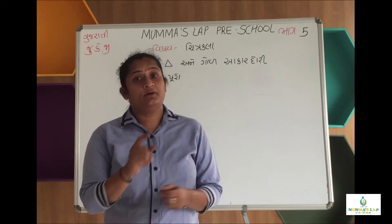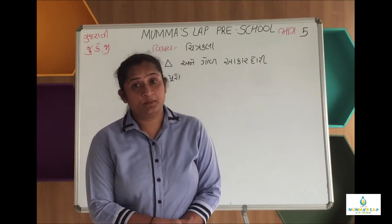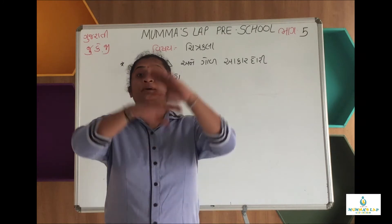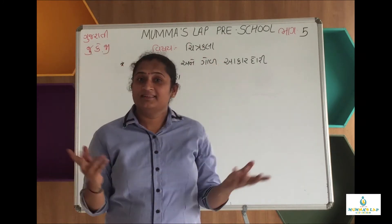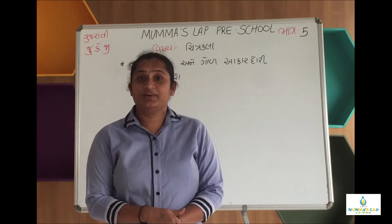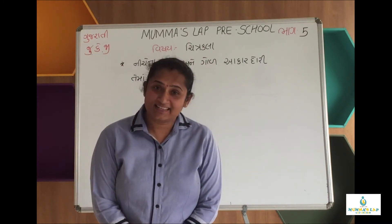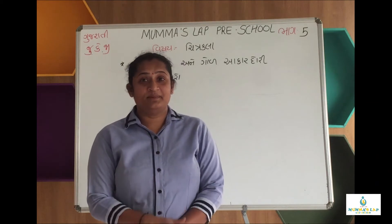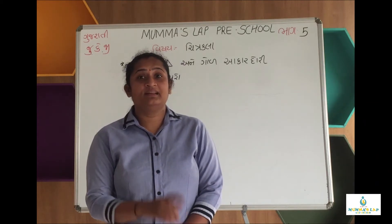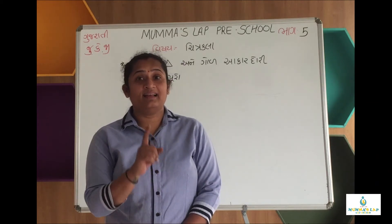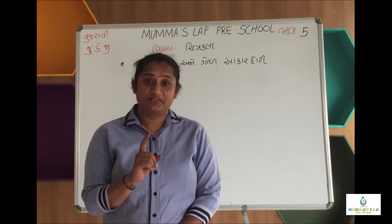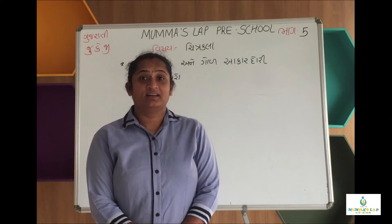અમને ગુલાબનો મુકાબ બોલી શું. ગુલાબ — ગુલોનો રાજા છે. ગુલાબના ફૂલ લાલ, પીળા, સફેદ. (We call the rose a flower — the rose is the king of flowers. Rose flowers are red, yellow, white.)